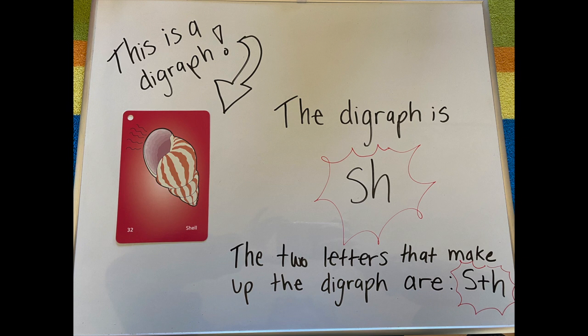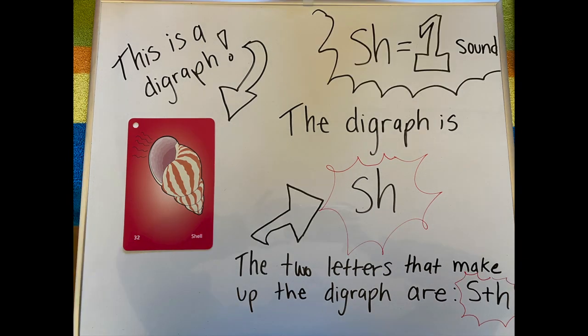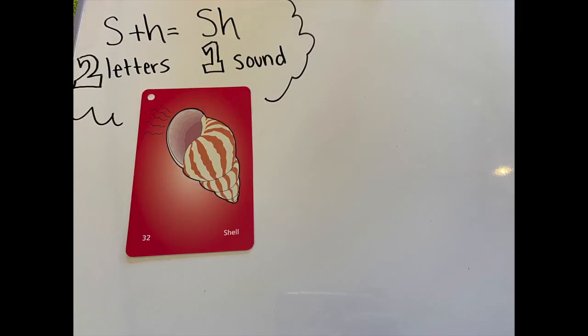The two letters that make up the sh sound are S and H. When I put those two letters, S and H, together, I make one sound, and that sound is sh. You should know that S and H together make the sh sound. The two letters make one sound, and that makes it a digraph.